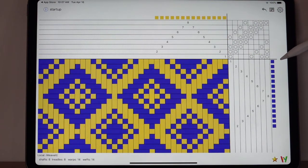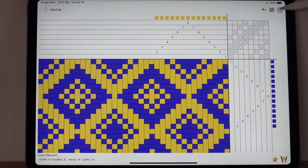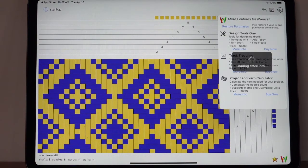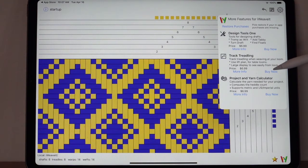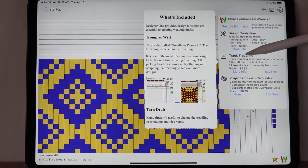To get to those, pick the menu, pick add-on features. Each one is described here and you'll see a buy now button and a more info. You can get more information about them there.